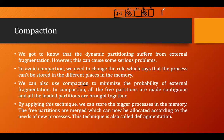After compaction, the memory will look like this: there is the operating system, then the loaded part of 2MB, then another loaded part with the process of 3MB, and then the free space is now 6MB contiguous. This 6MB comes from combining the original 2MB and 4MB free partitions. We get contiguous free memory after compaction. By applying this technique, we can store bigger processes, as the free partitions are merged and can now be allocated according to the need of new processes.